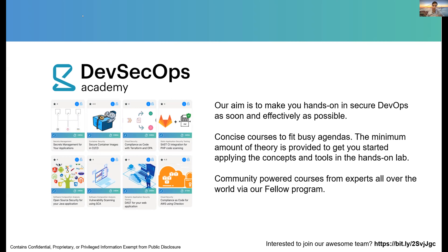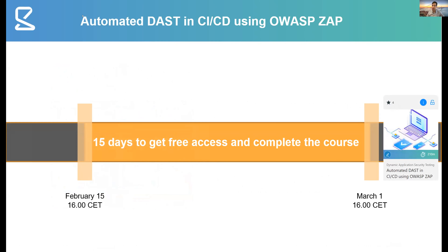Today's webinar is around automated DAST, one of the many aspects in secure DevOps and one of the more difficult topics because getting automation running at an effective speed is not the easiest thing to do. You will get the opportunity to do the course Freddy worked on, and you will have 15 days of free access to complete the course and the hands-on labs.